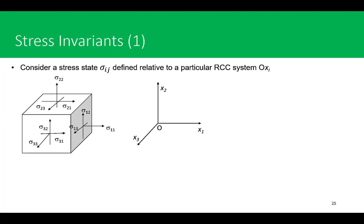Consider a stress state sigma_ij defined relative to a particular rectangular Cartesian coordinate system O-x_i, where i varies from one to three, giving axes x1, x2, and x3. Based on this coordinate system, if we take an infinitesimal material element as shown on the screen, our stress tensor can be defined by nine components. The direct components are always related to the axis coordinate being used — for example, sigma_22 is the force in the two-direction on the surface whose normal is in the two-direction.